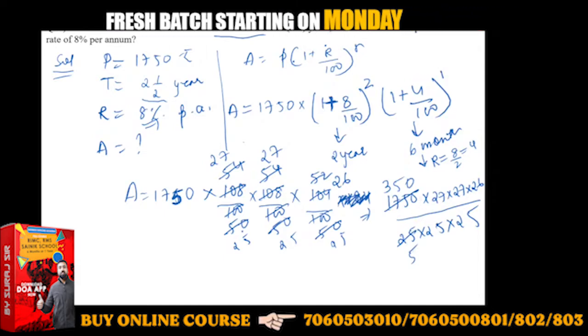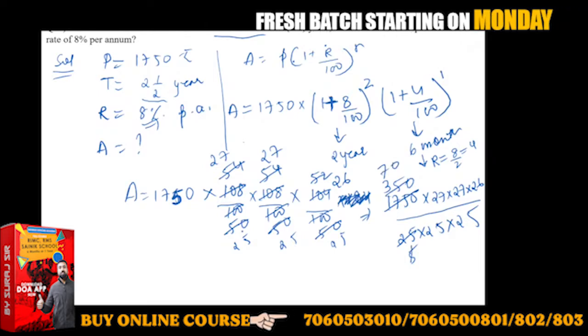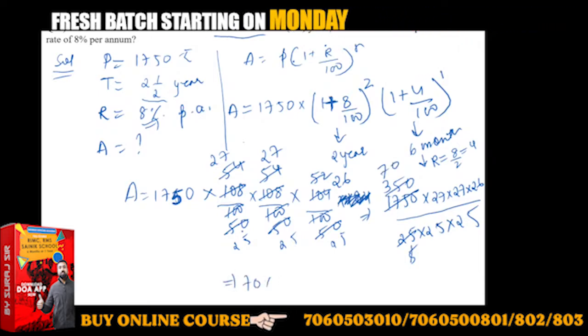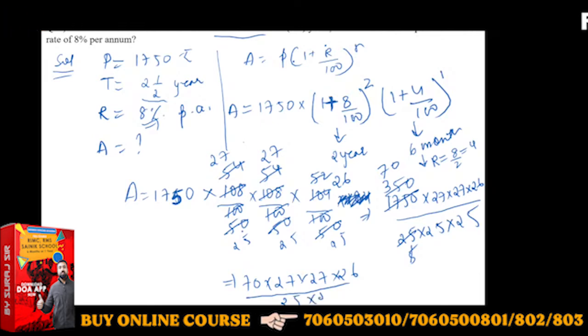This will be 570. Now solve: 70 into 27 into 27 into 26 upon 25 into 25.